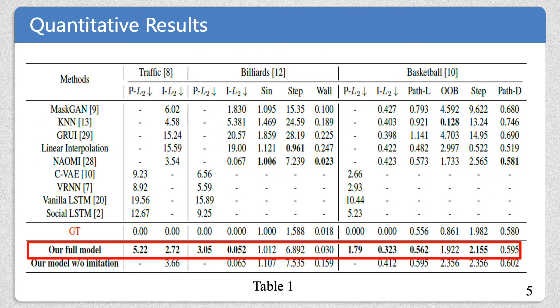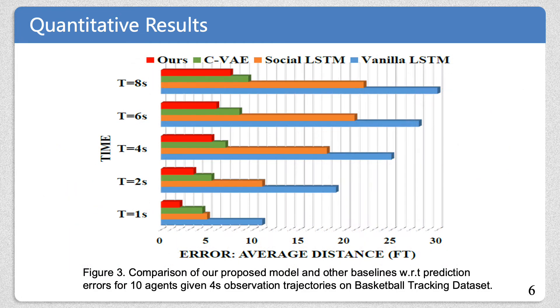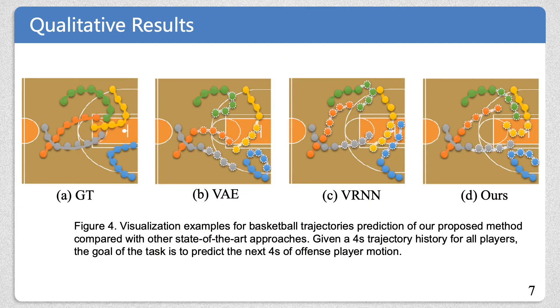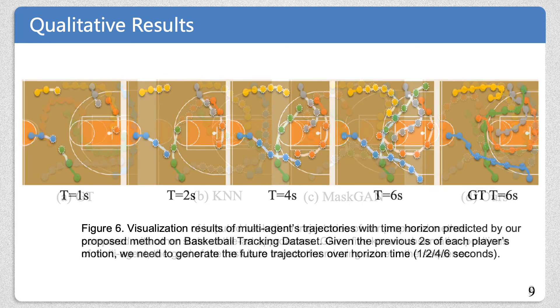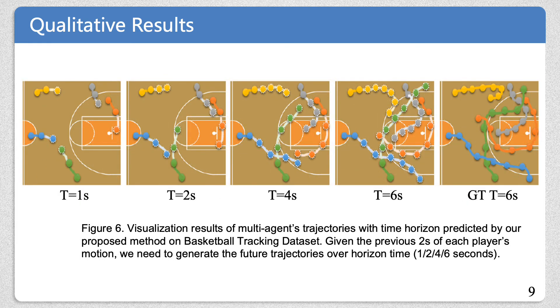In the experiment, we show the quantitative results of our model compared with state-of-the-art methods on the dataset. Moreover, we also show some visualization examples for basketball trajectory prediction and missing value imputation. Finally, we present additional results.